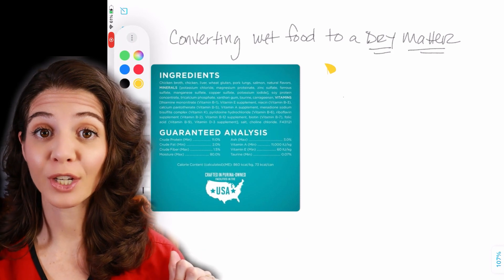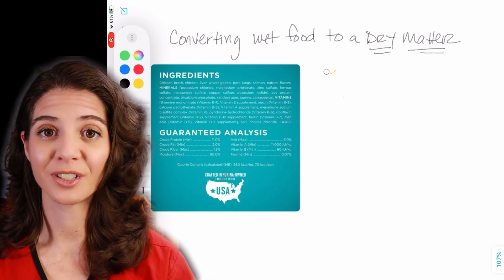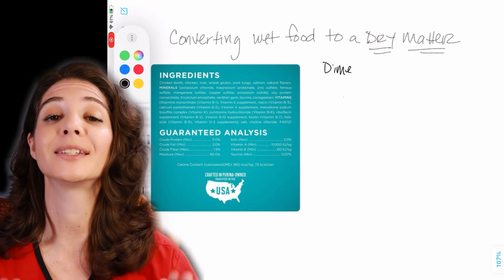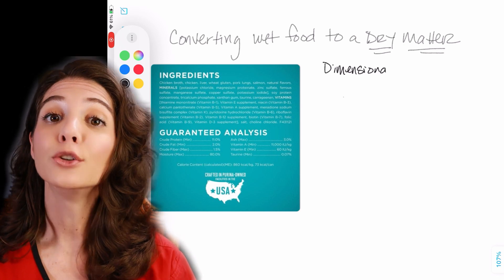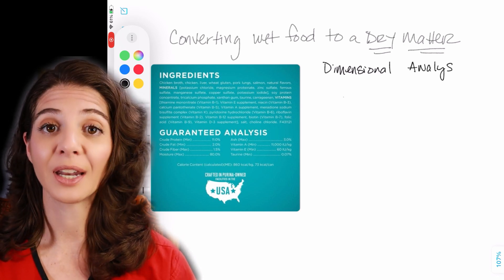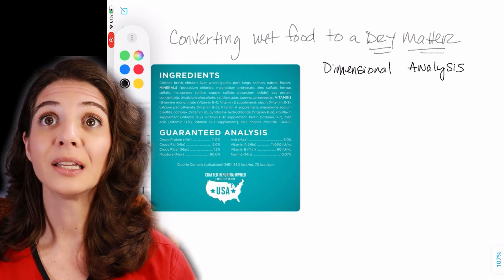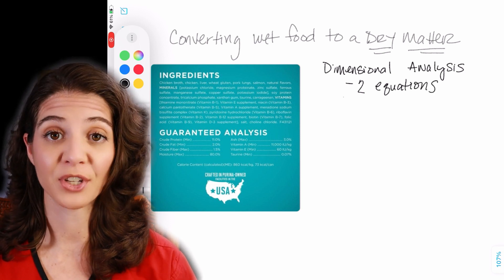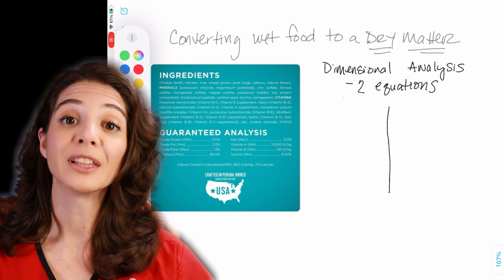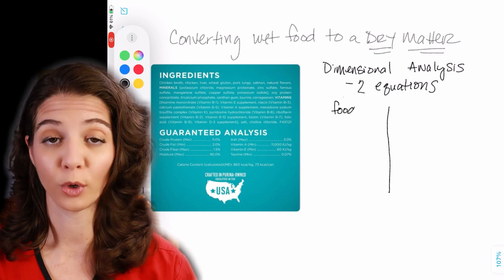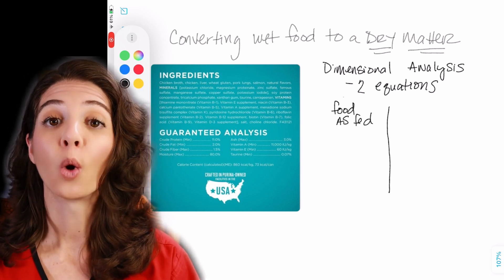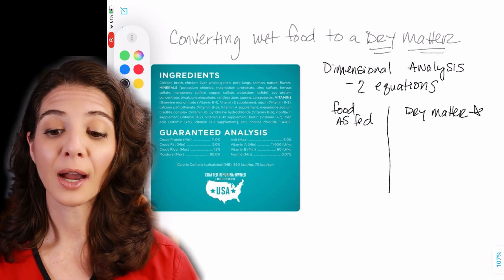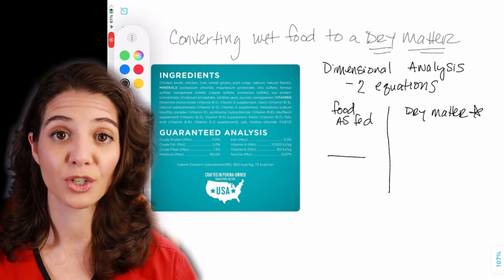I'm going to pull up a green screen with a whiteboard to demonstrate the calculation. We are going to do something called dimensional analysis — that is taking two equations and using their relationship to come up with an answer: what is the dry matter basis of this canned food versus the standards, which are already presented on a dry matter basis. On the left side of the equation we're going to have the food we're analyzing, and on the right side we're going to have the dry matter basis. I pulled a random label for you guys — you can see the percentages are a little different than what we're used to.